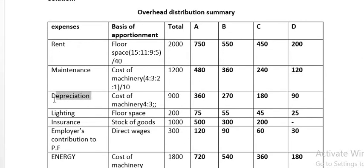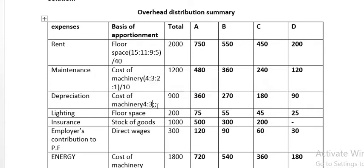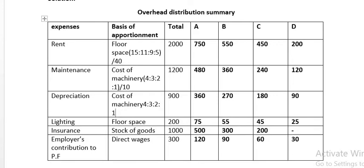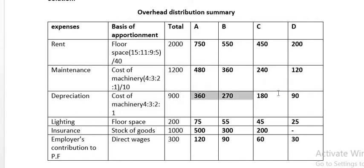Depreciation is also apportioned on the basis of cost of machinery. Using the same ratio of 4:3:2:1 already computed, the total depreciation of 900 will be distributed to all four departments accordingly.